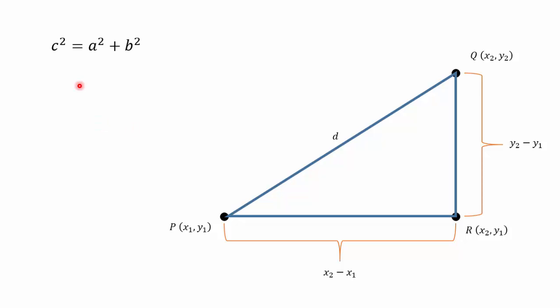So using Pythagoras' theorem, the hypotenuse is D, A can be the horizontal distance and B the vertical distance. With substitution we get D squared equals the horizontal distance squared plus the vertical distance squared.